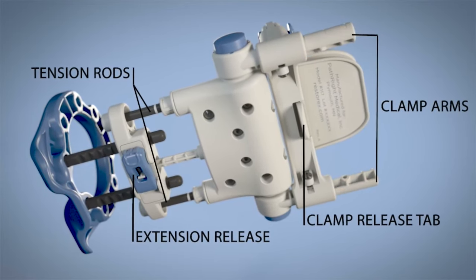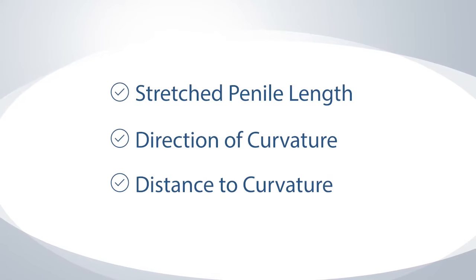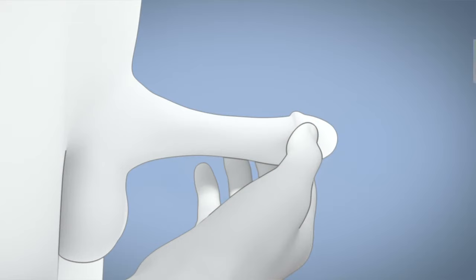Let's complete the one-time setup of the Restorex device. To do so, you need to obtain three anatomical measurements: stretched penile length, direction of curvature, and distance to curvature.